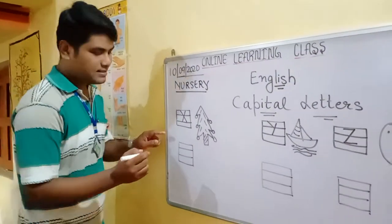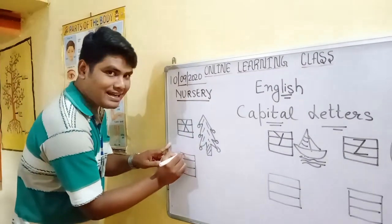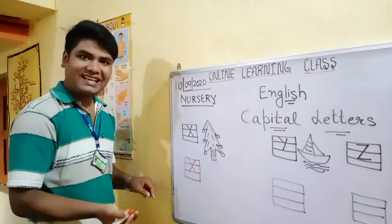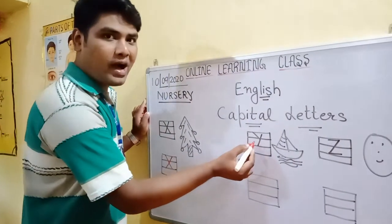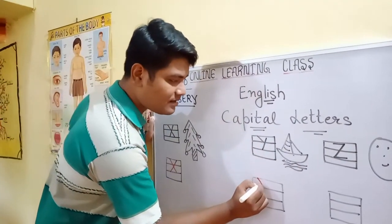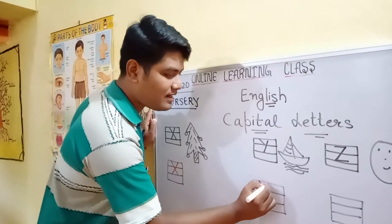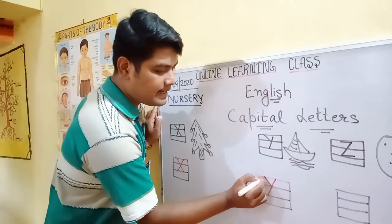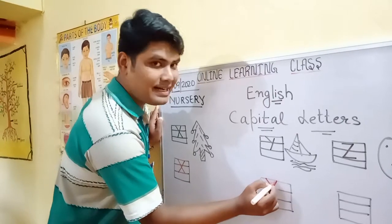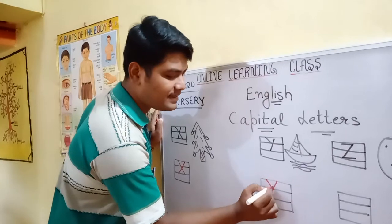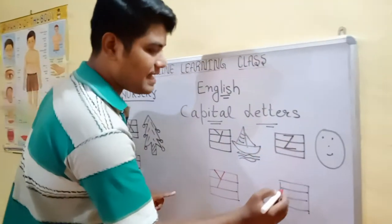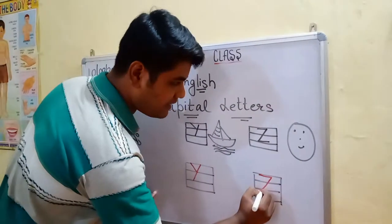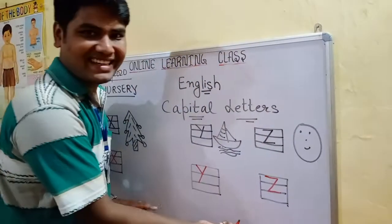Now let's start writing the letters. For X, draw a slanting line from first to third line and again a slanting line. This is capital letter X. Now how we'll write Y — from first line to second line draw a slanting line, again from first line a slanting line to third line. First slanting line from first line to second line and second big slanting line from first line to third line like this. For Z, the last letter, draw a slanting line from first to third line and draw again one slanting line on the third line. Z.